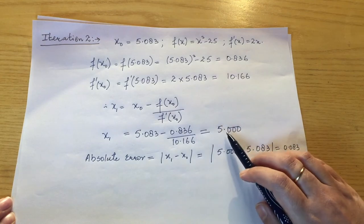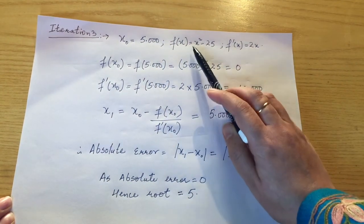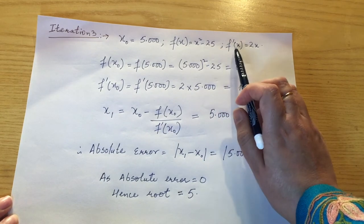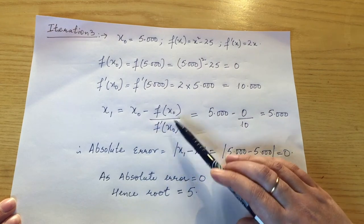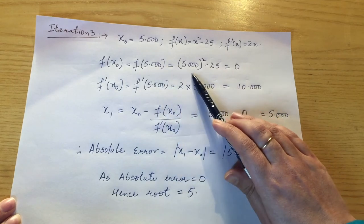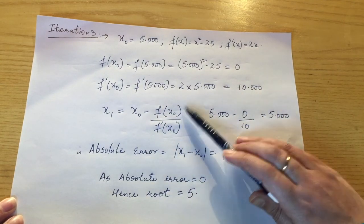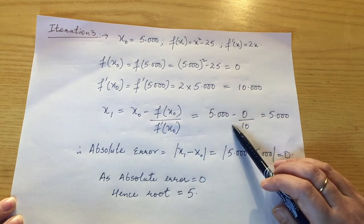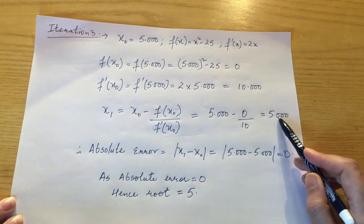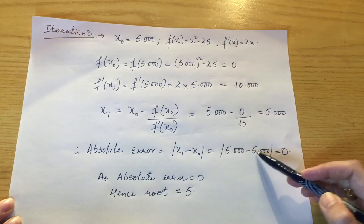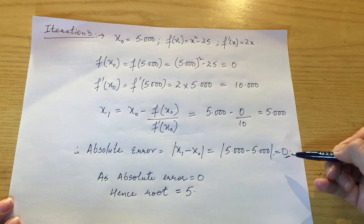In iteration 3, x₀ = 5.000. With f(x) = x² - 25 and f'(x) = 2x, we calculate f(x₀) = 0 and f'(x₀) = 10.000. Applying the formula gives x₁ = 5.000. The absolute error = |5.000 - 5.000| = 0.